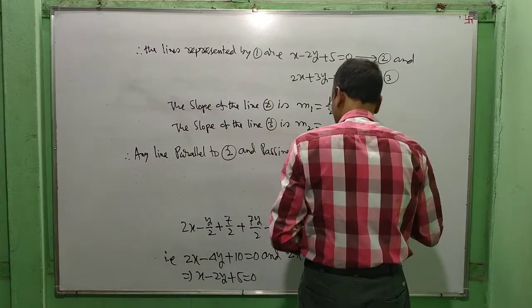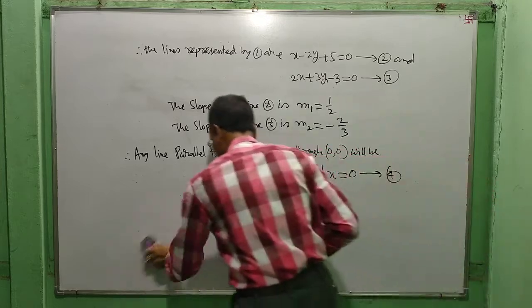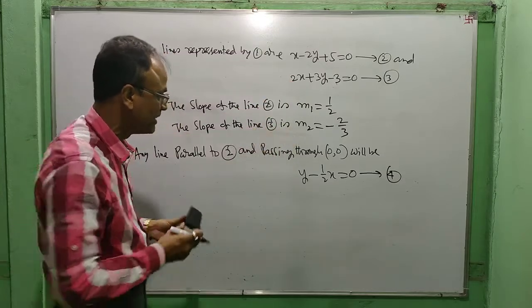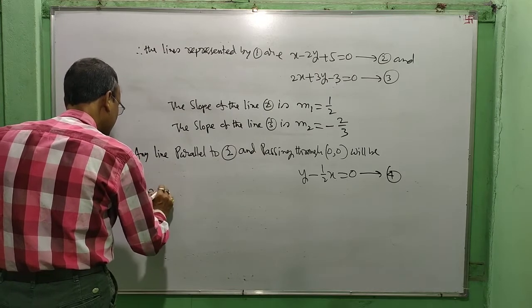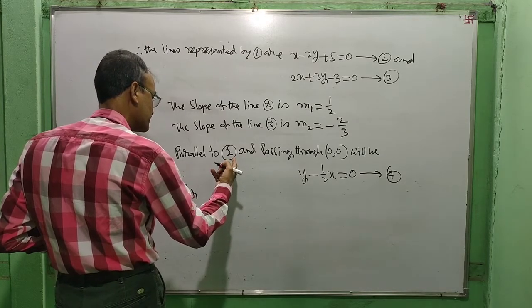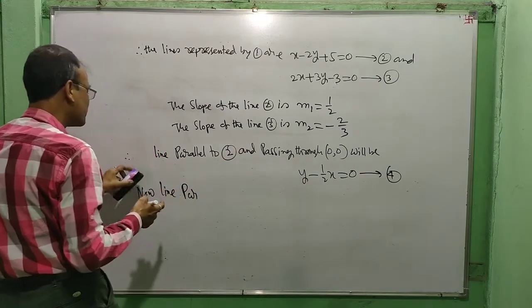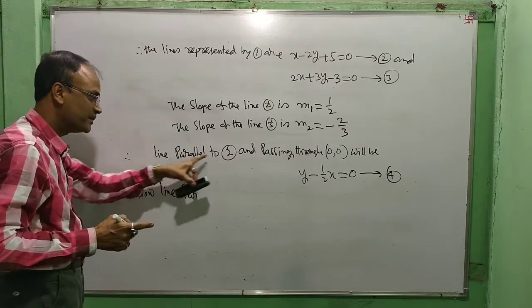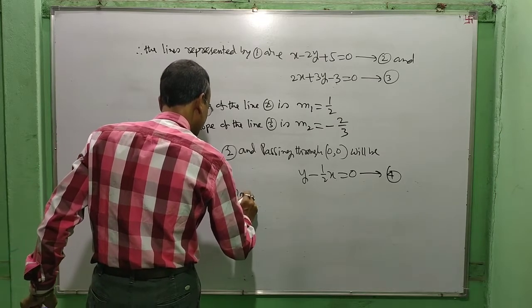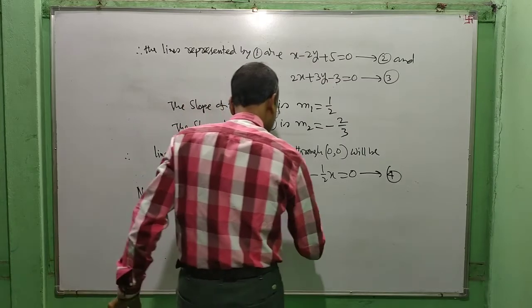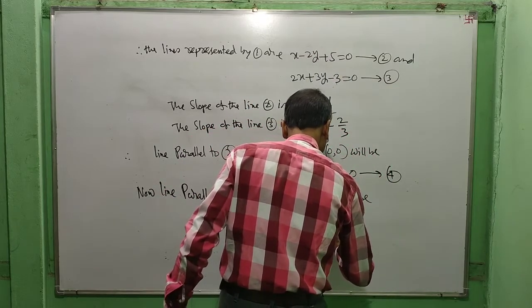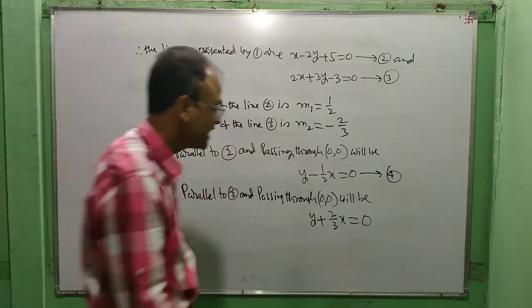Call this equation 4. Also, any line parallel to line 3 and passing through (0, 0) will be y + (2/3)x = 0. Call this equation 5.